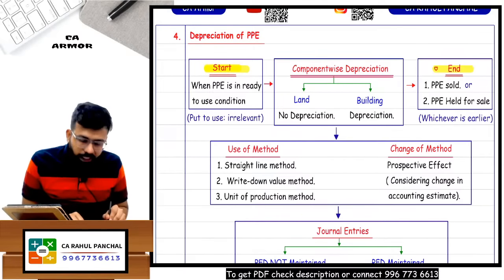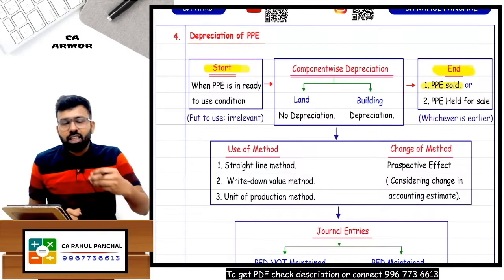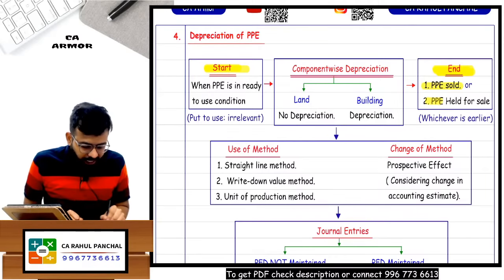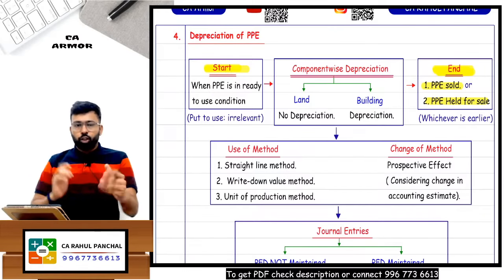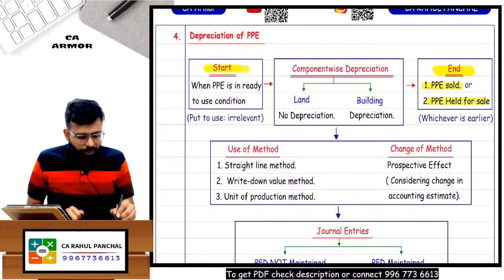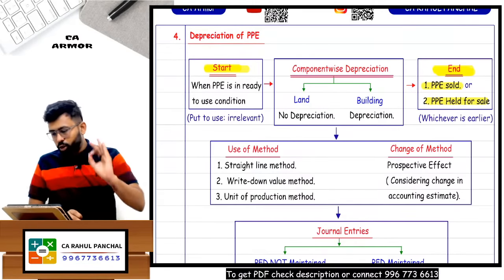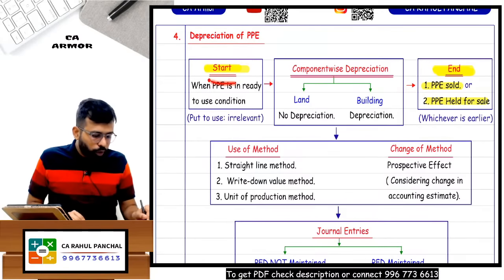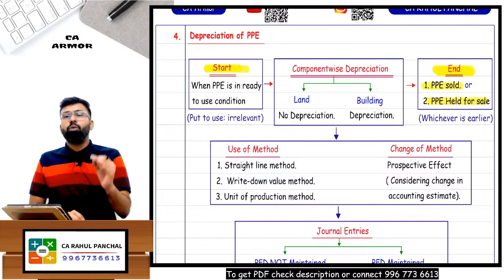When will you stop charging depreciation? You will stop when the asset is sold - if no asset, no depreciation. Or if the asset is held for sale: now you are not going to use it, you're going to sell it, so you can't charge depreciation - it should be recorded at fair value. So if the asset is held for sale or sold, no depreciation should be charged. Depreciation is charged from ready-to-use date until the sale.